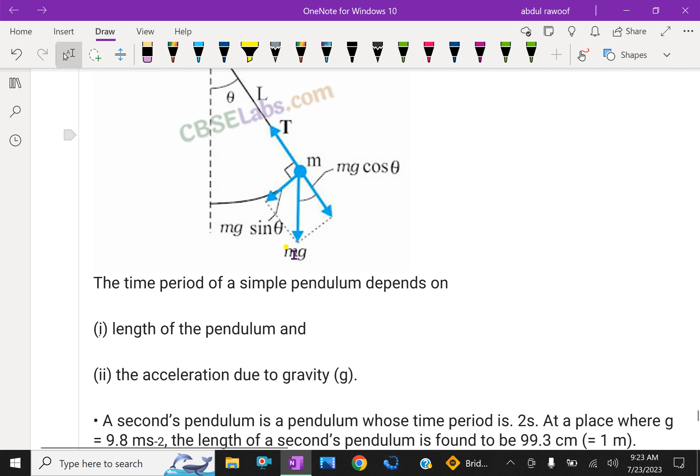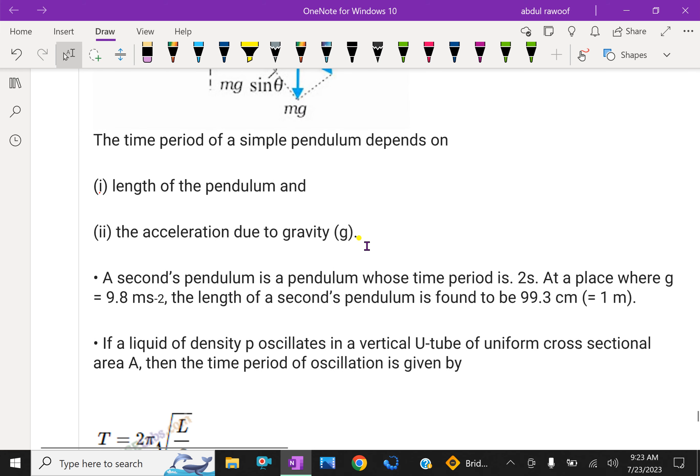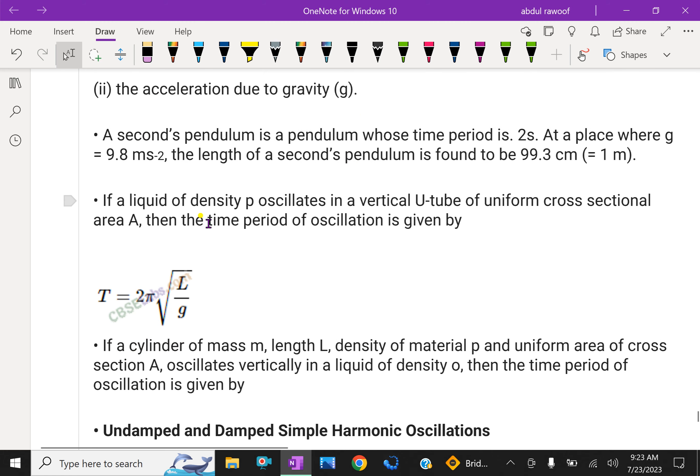The time period of a simple pendulum depends on the length of the pendulum and acceleration due to gravity. Time period depends only on the length of the pendulum as well as acceleration due to gravity, not other things. A seconds pendulum is a pendulum whose time period is 2 seconds. So it takes totally 2 seconds to complete one full oscillation. At a place where g = 9.8 m/s², the length of seconds pendulum is found to be nearly 99.3 cm, nearly 1 meter.